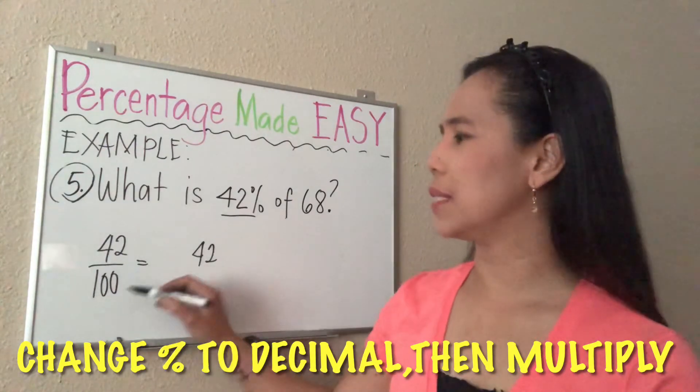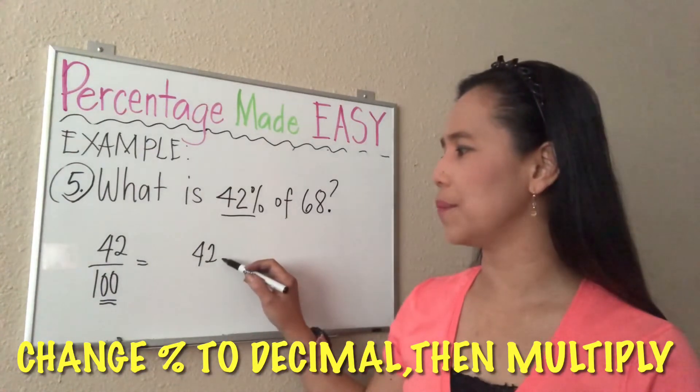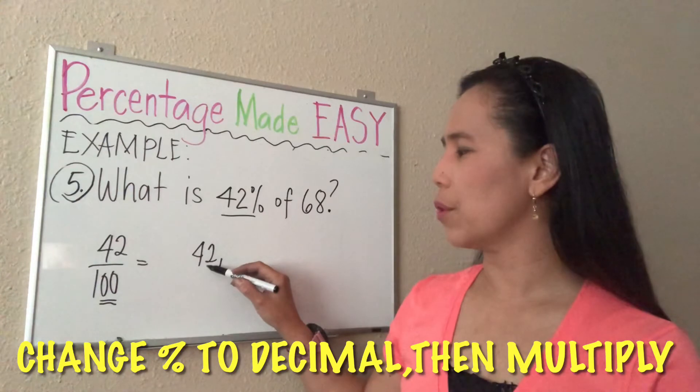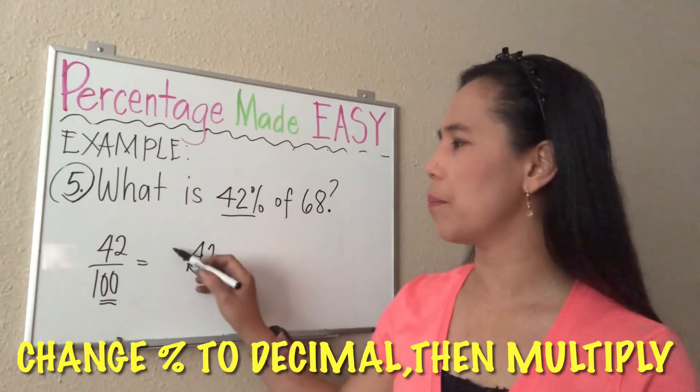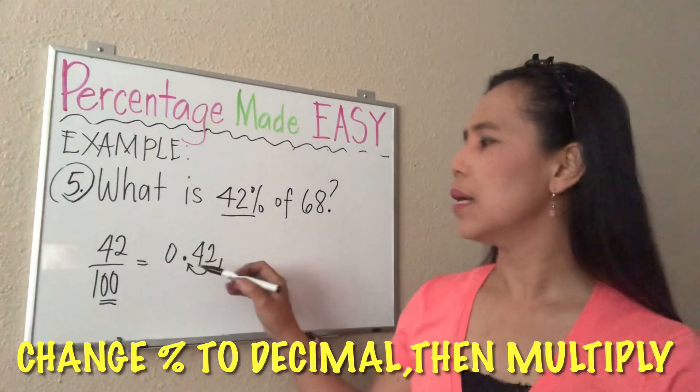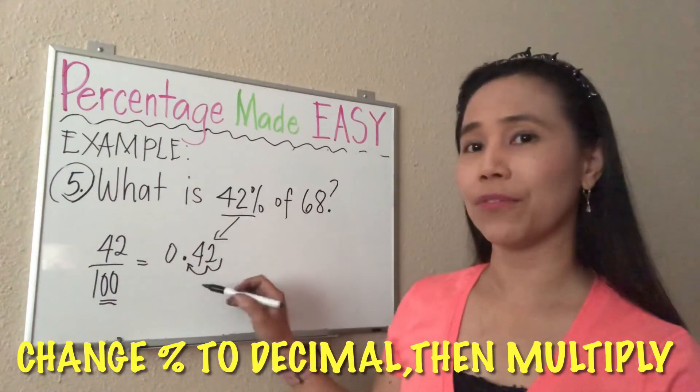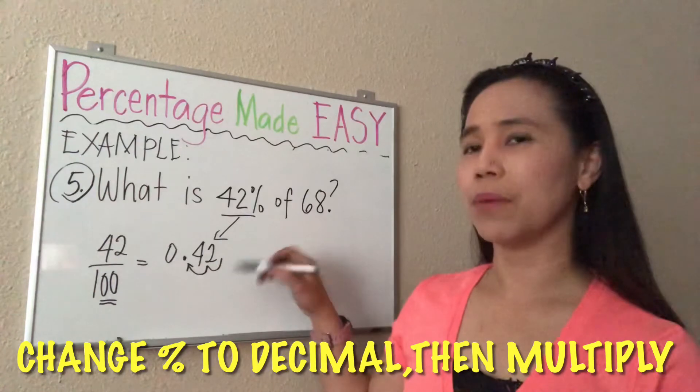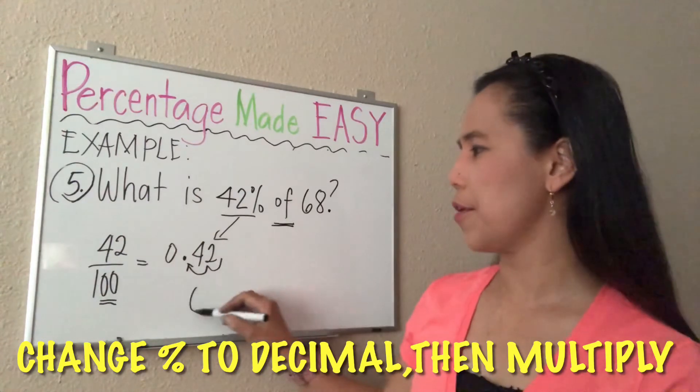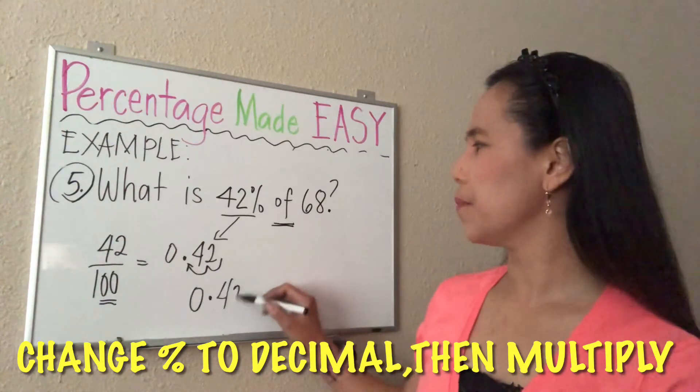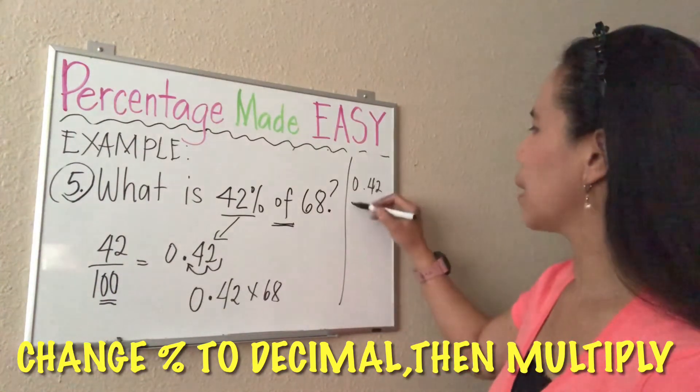Just copy 42, and since we have two zeros here, it means two decimal places. Move the decimal point from the right two places to the left, giving us 0.42. So 42 over 100 equals 0.42, meaning 42% equals 0.42. Now we are ready to multiply: 0.42 times 68, since 'of' means multiply.